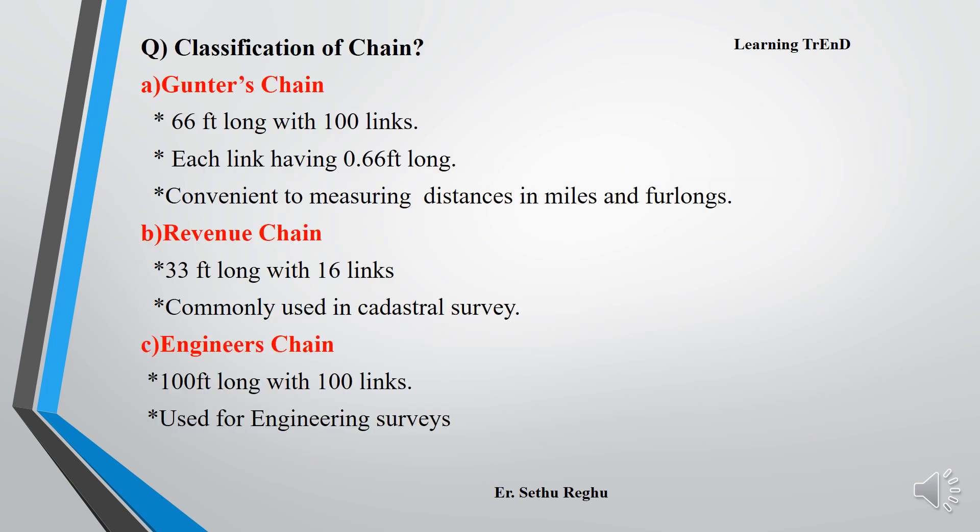What are the classifications of chain? There are three classifications: Gunder's chain, revenue chain, and engineer's chain. First is Gunder's chain, which is 66 feet long with 100 links. Each link is 0.66 feet long. It is convenient for measuring distances in miles and furlongs.